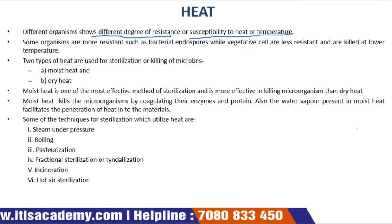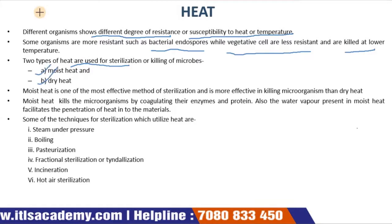Boiling is one of the oldest methods of moist heat control and is typically quite effective at killing vegetative cells and some viruses. Some organisms are more resistant, such as bacterial endospores, while vegetative cells are less resistant. Two types of heat are used for sterilization: moist heat and dry heat. Moist heat is more effective than dry heat.